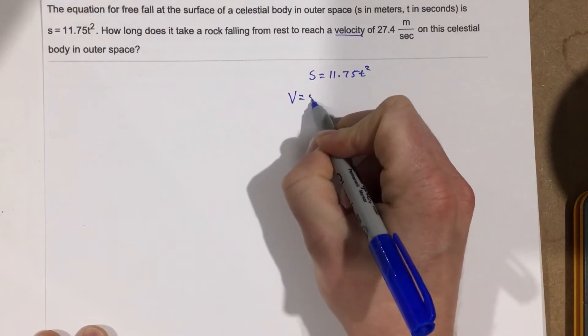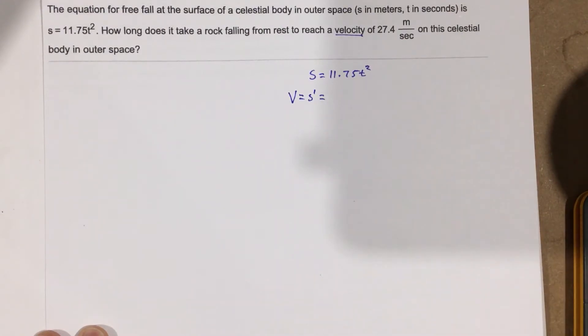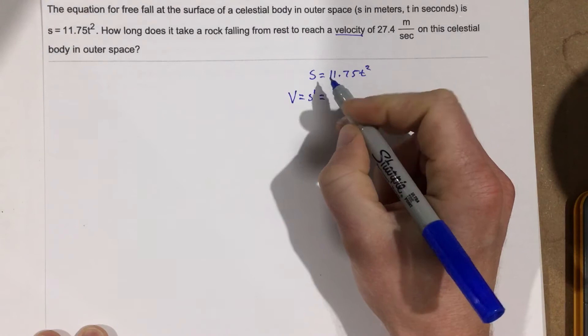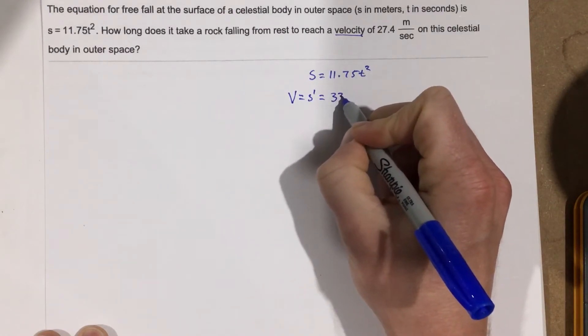So velocity is s prime, and we know that to be 23.5, bring the two to the front, that's 23.5 t.